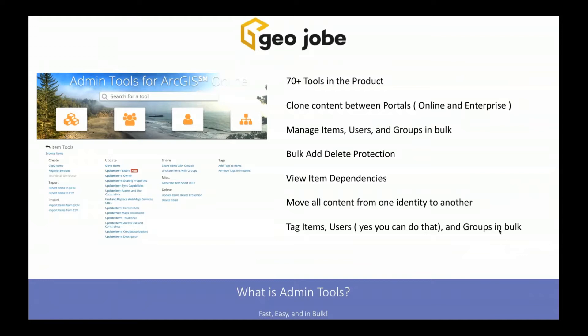You can view item dependencies — if you have a layer and want to know what web maps use it before you delete it or make changes, you can easily find that out. It doesn't just work with layers; it works with web maps and web apps, so you can see the entire chain of dependencies across your organization. That's an incredibly powerful tool.